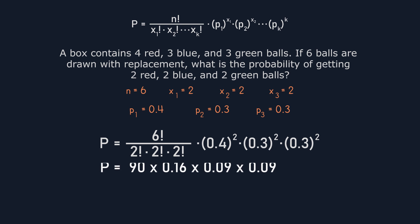Now, calculating this, we got 90 multiplied by 0.16, multiplied by 0.09, multiplied by 0.09, which gives us 0.1166. Therefore, the probability of drawing exactly 2 red balls, 2 blue balls, and 2 green balls is 11.66%.